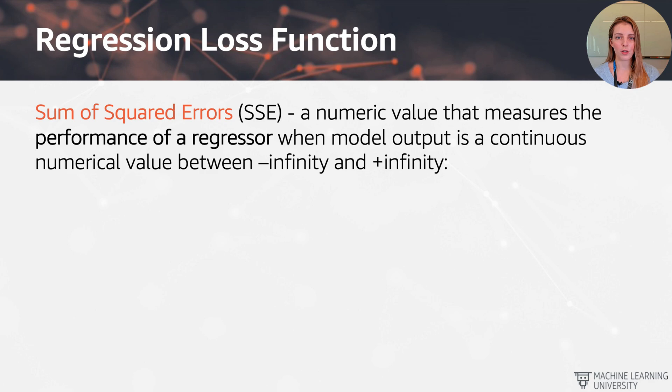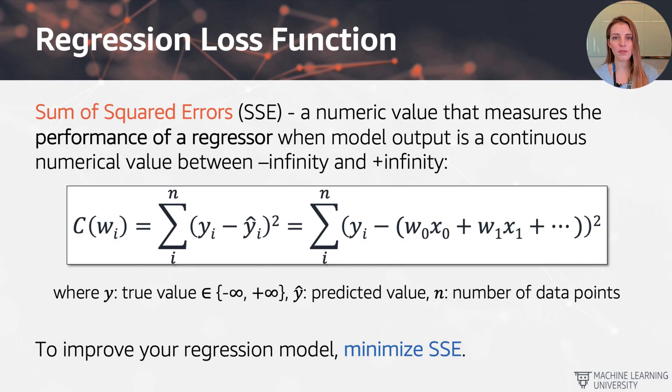One commonly used loss function or cost function is the sum of squared errors, which is a numeric value that measures the performance of a regressor when the model output is a continuous numerical value between minus infinite and plus infinite. And we have the expression here. So C of W, cost function as a function of the weights, is going to be a sum over all of the data points from i to n, and the delta between the underlying true value and the predicted value y hat. And you would also notice that there is a square here. So we want to penalize data points that are further away more. So this is what the square helps us achieve.